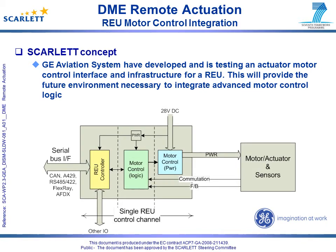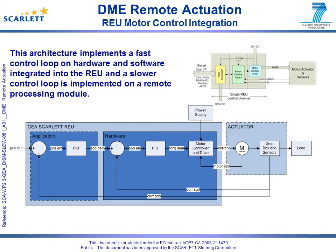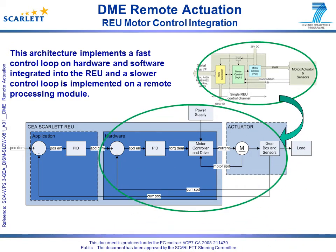This controller is embedded in an REU. This technology provides the initial building block of the electric actuator control function and creates the environment in which to integrate advanced motor control logic. This initial building block is integrated into an REU and connected via the backbone network with a core computing module. Fast control loop application software is implemented on the REU, providing speed control.